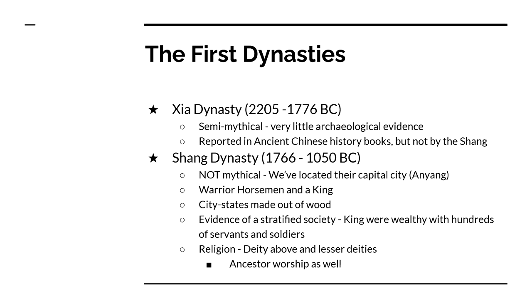We found evidence of their cities. Their cities were made out of wood because if the river flooded they could move and rebuild very quickly. We know that they were warriors who were horsemen. We know that they had a strong king — in fact there's evidence that their kings were very wealthy, with hundreds of servants and hundreds of soldiers. In some cases the kings were actually buried with servants and soldiers to protect them.